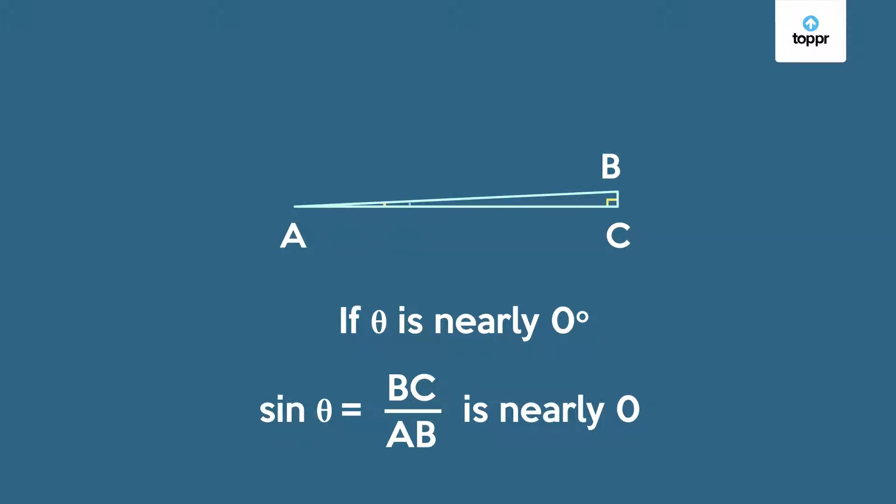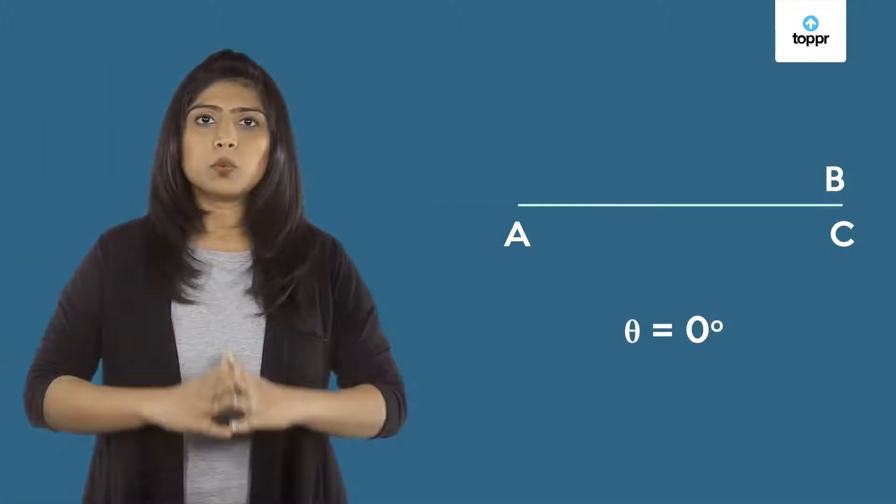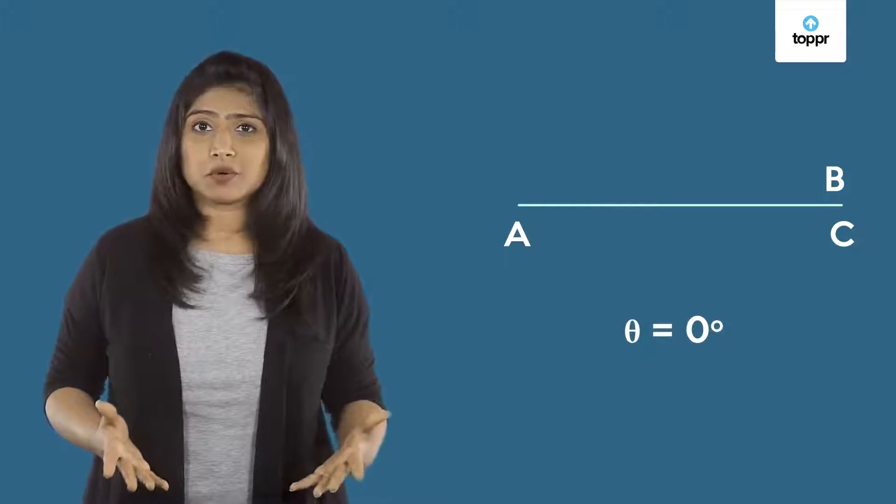Now can we make theta exactly equal to 0? Well if we make the acute angle 0 degrees we do not have a triangle anymore. We just end up with a single line segment.